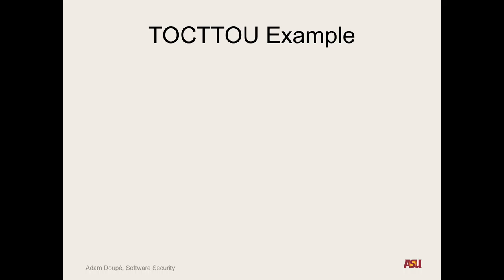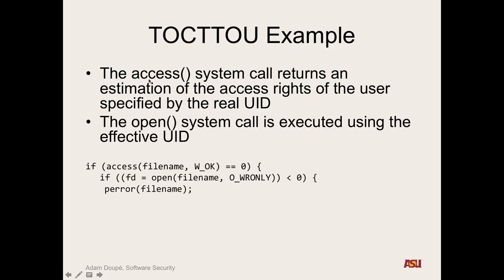It's like you check a condition at a particular instant in time, and by the time you're actually going to use the result of that condition, something has already changed. So the adversary can change the state of the system before you make a check, and when you use the results of that check. We saw an example where the access system call and the open system call — access tries to approximate whether the real user could access a file, and open actually opens it using the effective user ID of the process calling it. So if you're an adversary, in between the time access is checked and open is called, you can have the file now point to some other file that you, the user, can't access, but the process can because it's running as root.